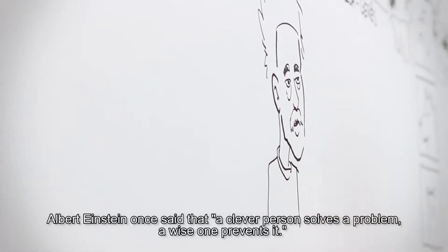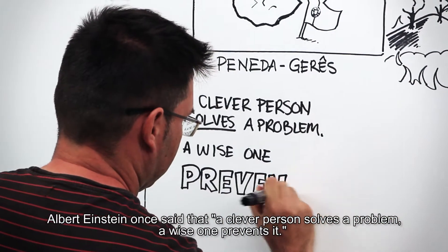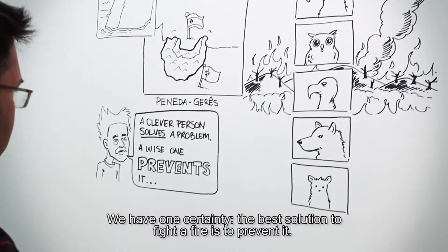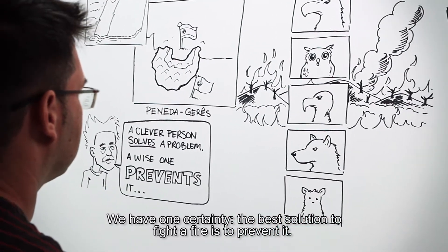We had to act. Albert Einstein once said that a clever person solves a problem, a wise one prevents it. We have one certainty: the best solution to fight a fire is to prevent it.